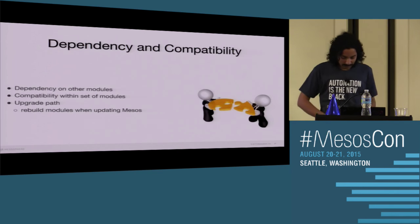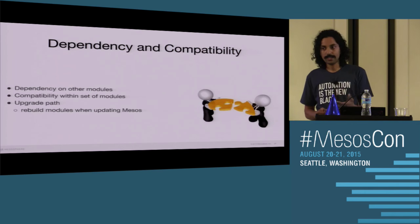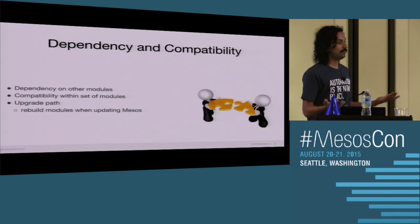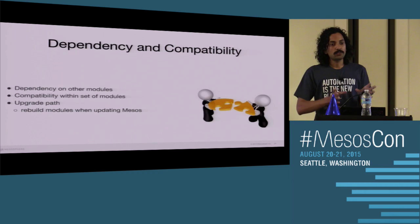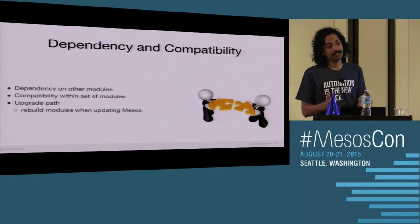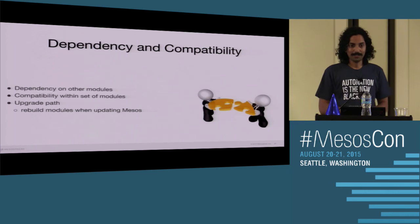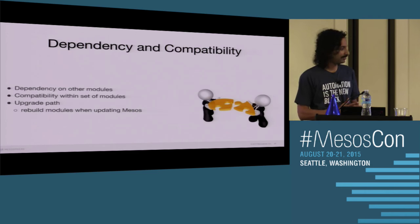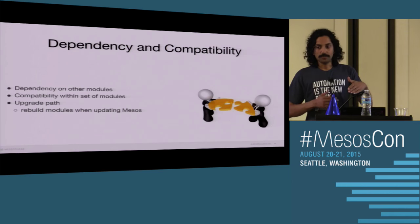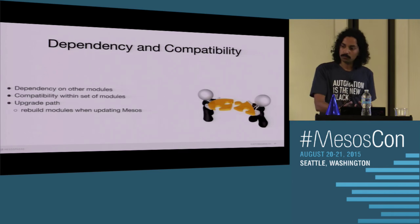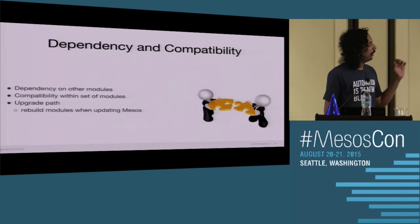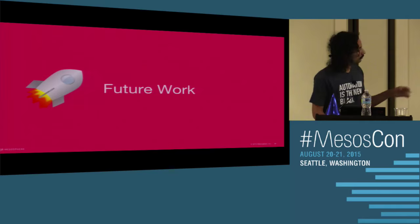Dependency and compatibility is another area we're still exploring. How do you define dependencies between two modules? Module A says it can work with module B but not C — what do you do? Can you have two different implementations of the same subsystem running at the same time? The answer is yes and no: for isolators, yes, you can have several; for allocators, you probably don't want two. The upgrade path is currently rigid — whenever you upgrade Mesos master or slave, you have to recompile the module against the new version, mostly because the API is still evolving and not yet stabilized.